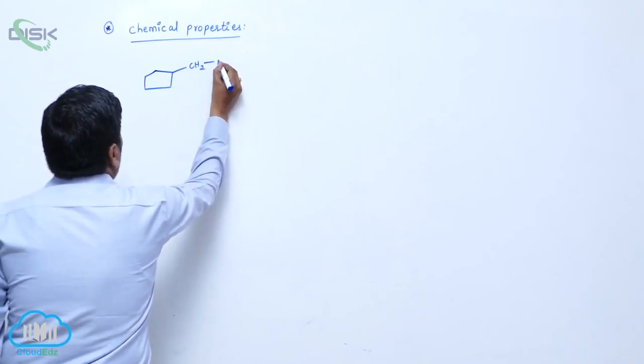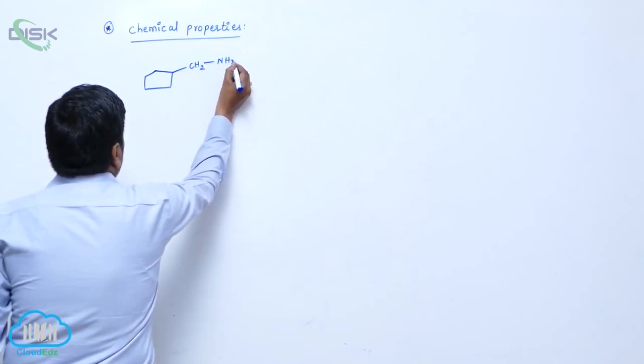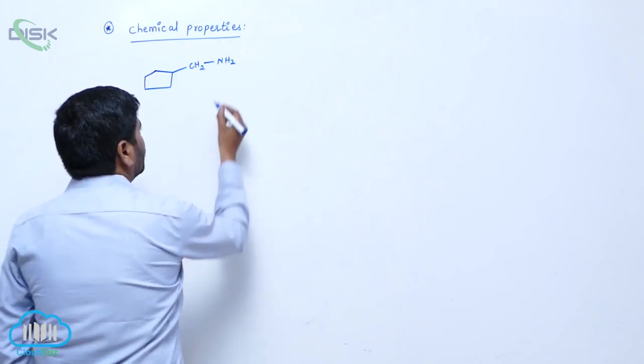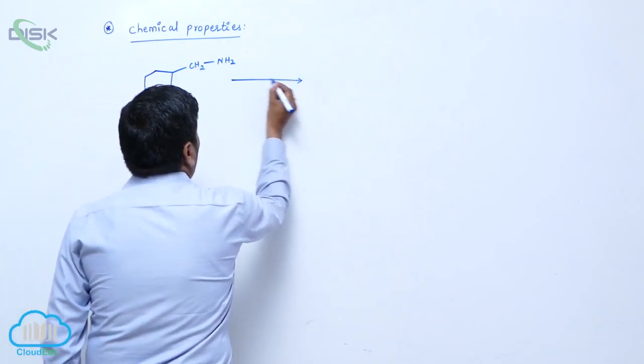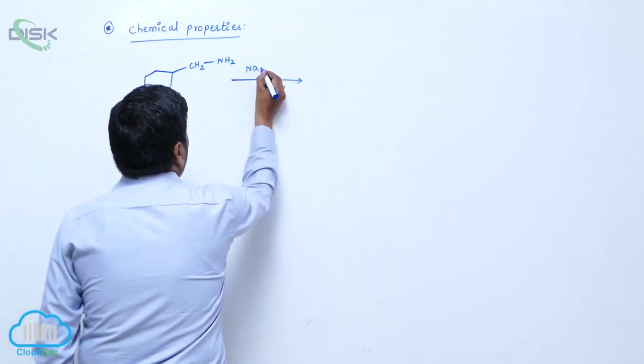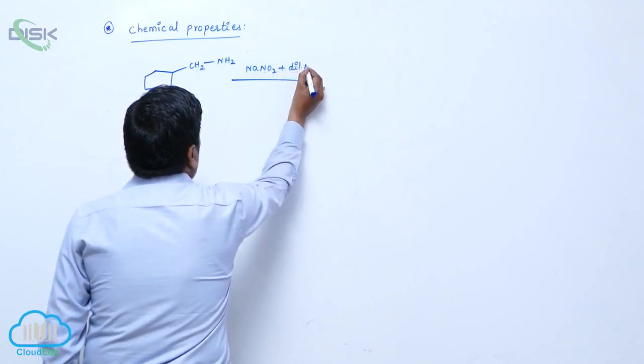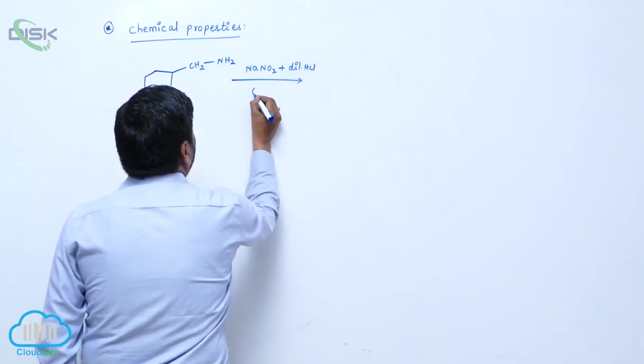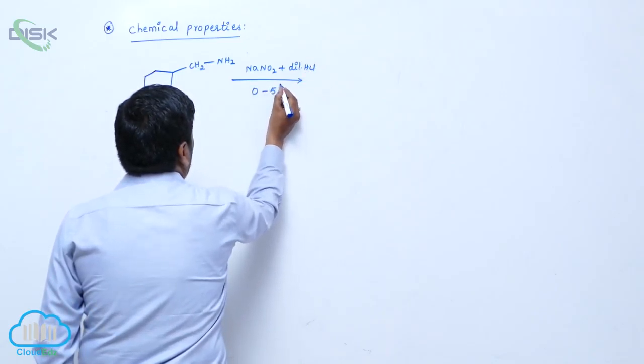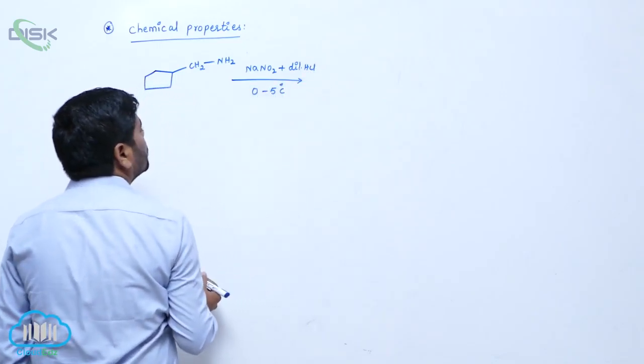This is CH2, here is NH2. Sodium nitrite plus dilute hydrochloric acid 0 to 5 degrees centigrade. The major product is: